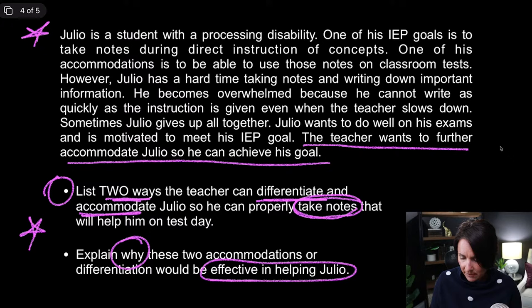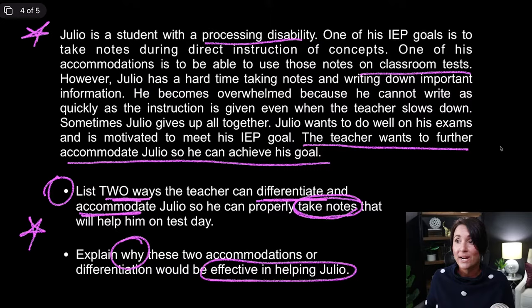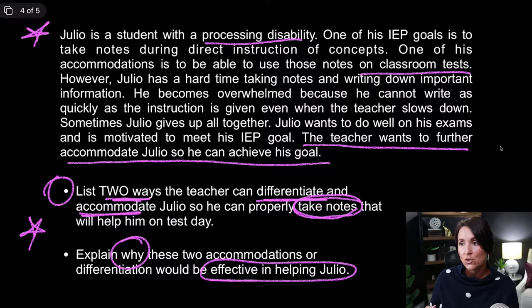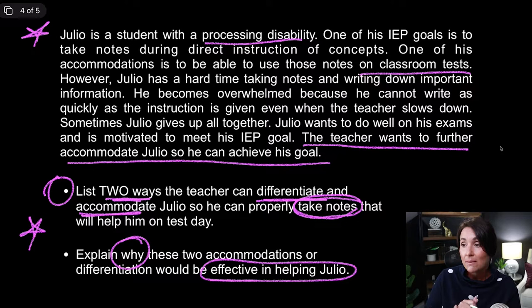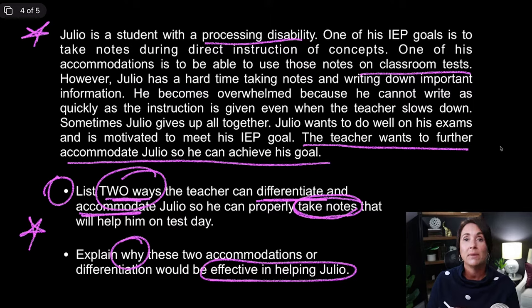Julio is a student with a processing disability. One of his IEP goals is to take notes during direct instruction of concepts, and one of his accommodations is to be able to use those notes on classroom tests. However, Julio has a hard time taking the actual notes and writing down important information — note-taking is a skill that requires a lot of guidance. He becomes overwhelmed because he cannot write as quickly as the instruction is given, even when the teacher slows down. Sometimes Julio gives up altogether. Julio wants to do well on his exams and is motivated to meet his IEP goal.